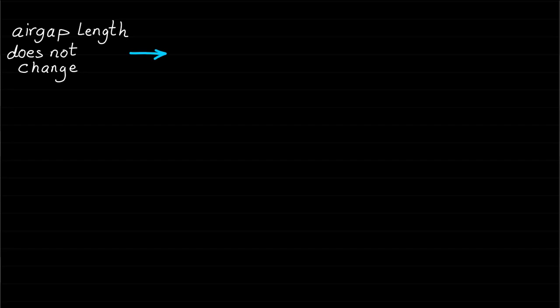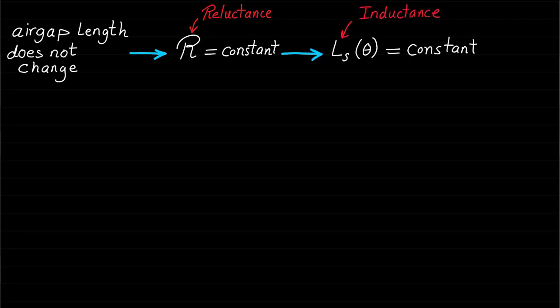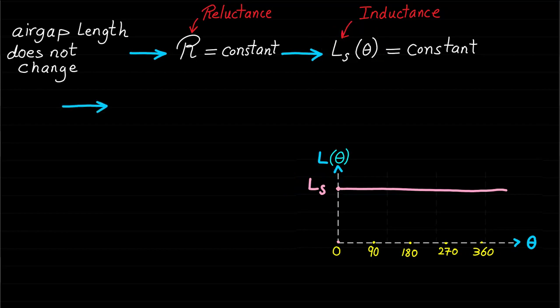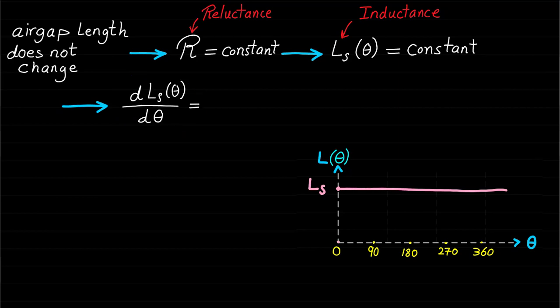Since the air gap length or the geometry of this machine does not change with rotor position, the reluctance of the magnetic material path does not change. Therefore, the stator self-inductance seen by the stator magnetic field path, denoted by Ls, does not change with rotor position. In other words, the stator self-inductance Ls is a constant value with respect to rotor position as shown. That means the rate of change of inductance with respect to rotor position, dL(θ)/dθ, will equal to zero. Therefore, the torque will equal to zero.